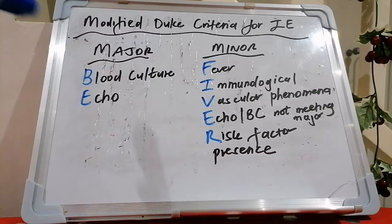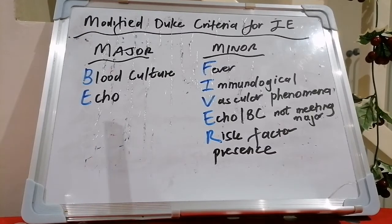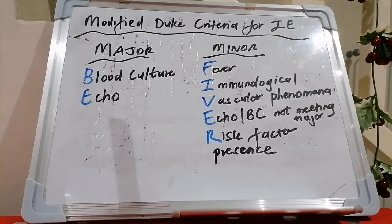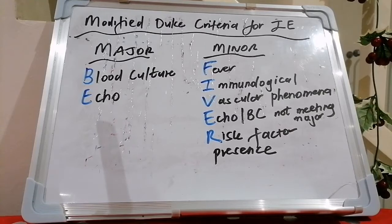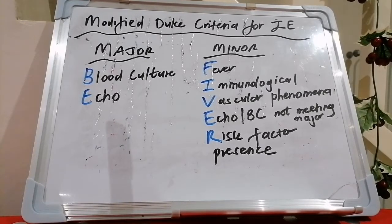For the major criteria we're looking at B and E — blood culture and echo. In terms of blood culture, you may have typical microorganisms consistent with infective endocarditis from two separate blood cultures, including the HACEK group of organisms, Strep. gallolyticus, viridans group strep, Staph. aureus, or community-acquired enterococci in the absence of a primary focus.